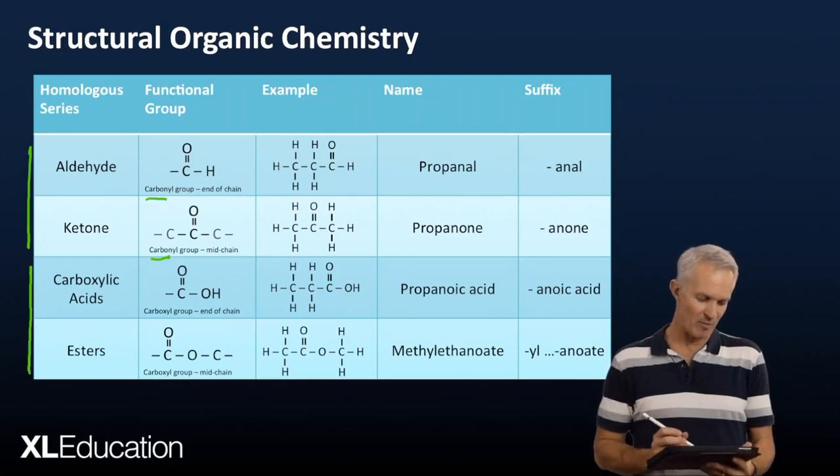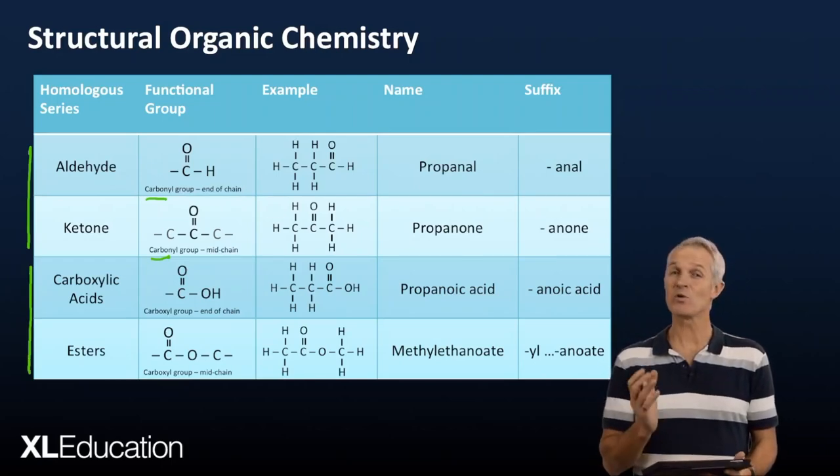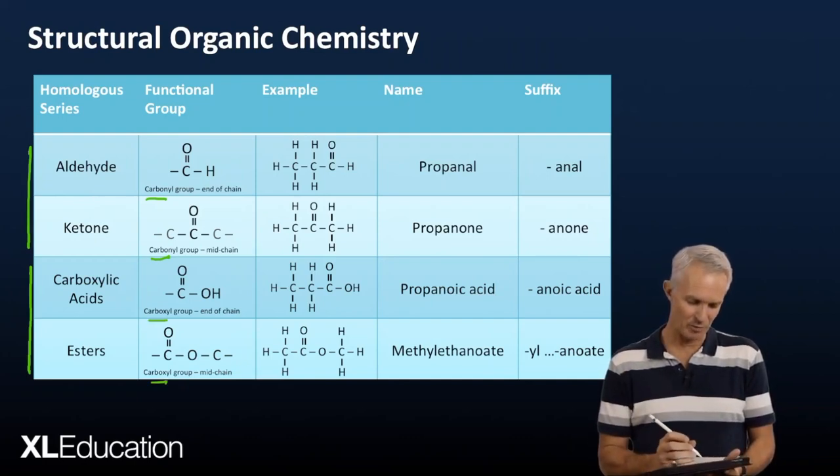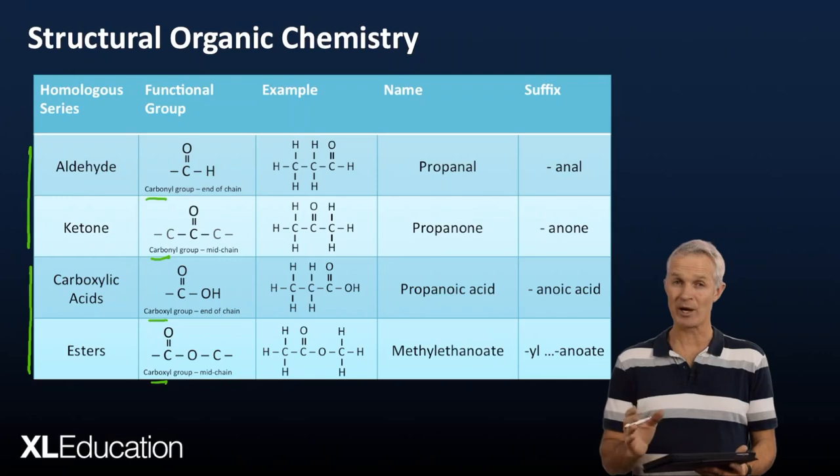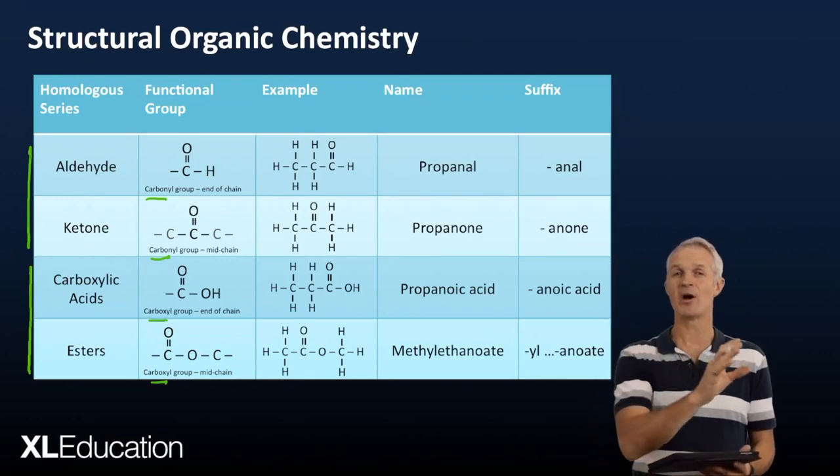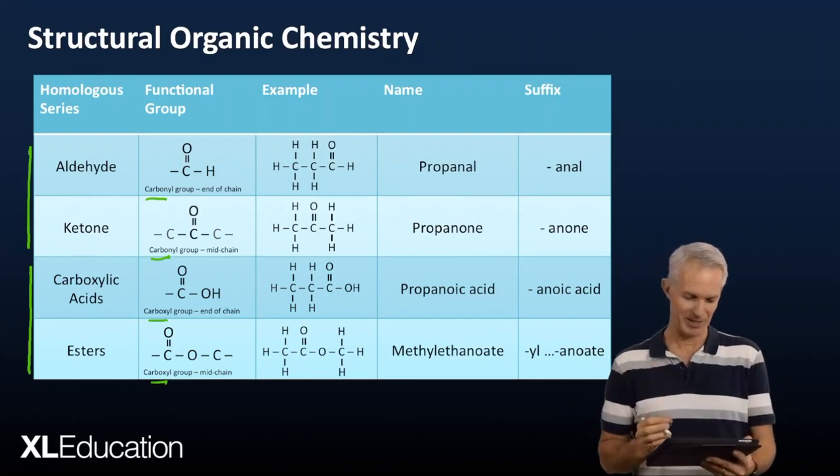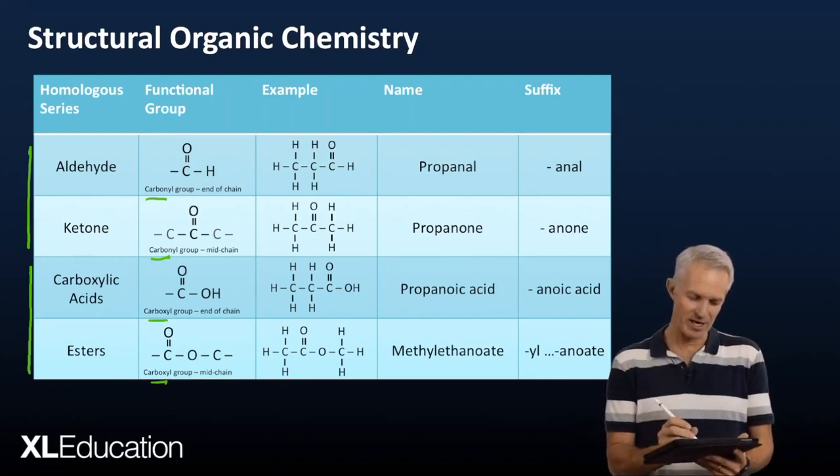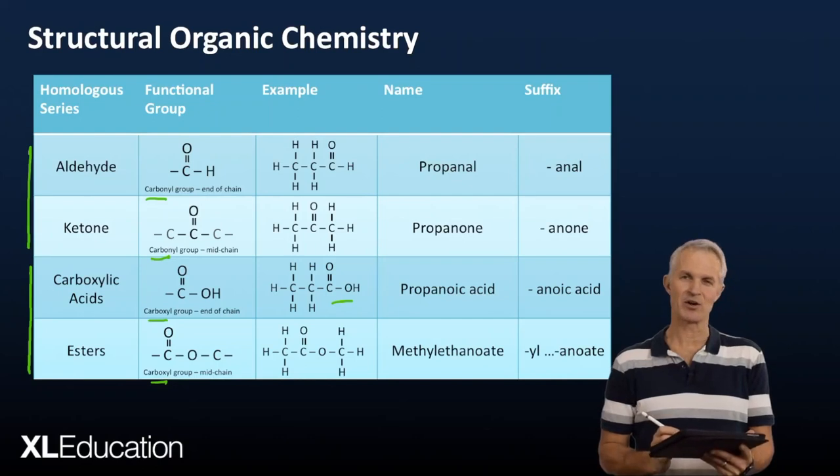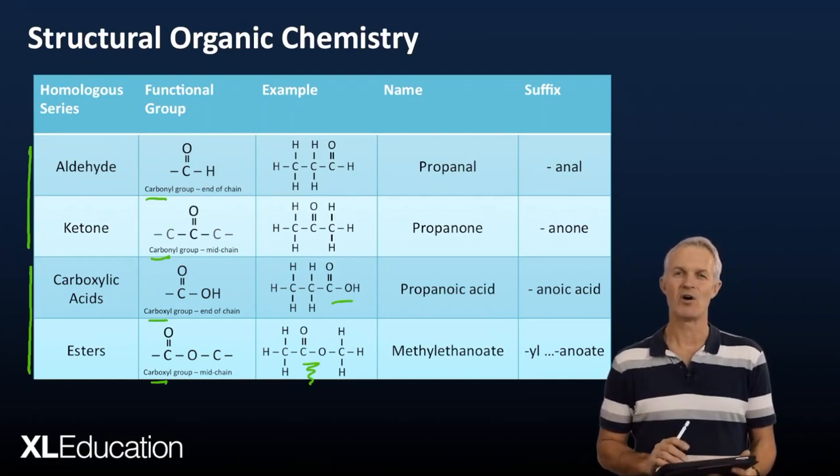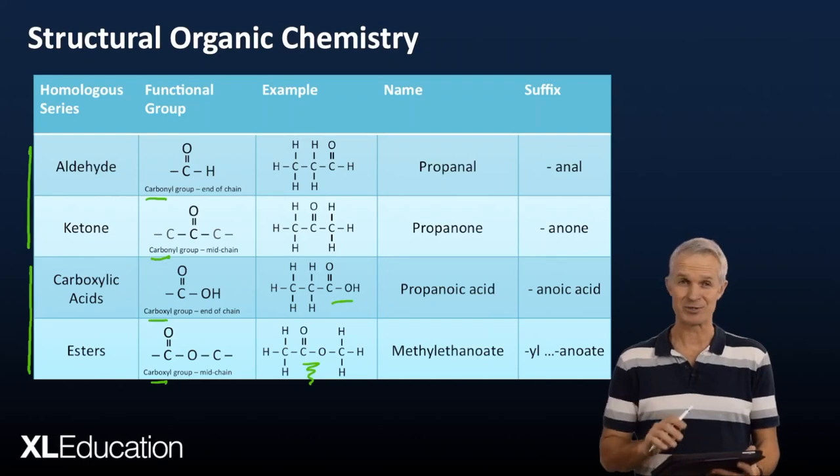The last two groups that you'll need to know, the last two series - carboxylic acids and esters - also share the same functional group, that being a carboxyl group, which is a combination of the carbonyl C double bond O and the OH, which is hydroxyl. Carbonyl, hydroxyl, carboxyl. Once again, on the end of the chain, it's a carboxylic acid, and when it's in the middle of the chain, it's an ester. So we're going to go through a couple of naming examples shortly, but that gives you an overview of the families, and you can get to start to place who's who.